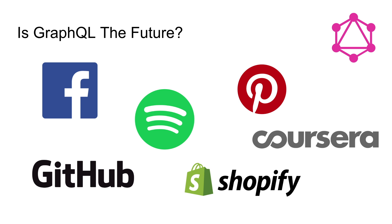So after looking at the advantages, is GraphQL the future of APIs? Well, we don't know that yet, but we do know that many large-scale companies have started using GraphQL themselves. Obviously Facebook created it so they're using it, and currently Spotify, GitHub, and Pinterest along with other large companies are also using GraphQL. Only time will tell if it catches on and becomes the API standard.